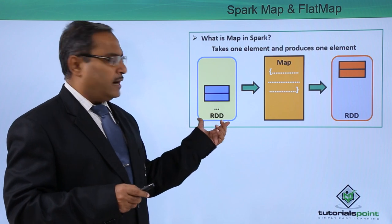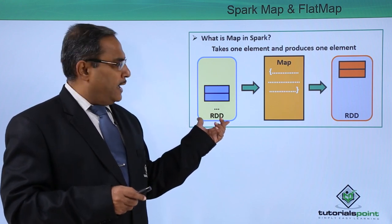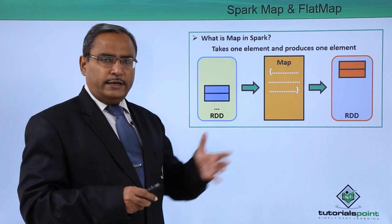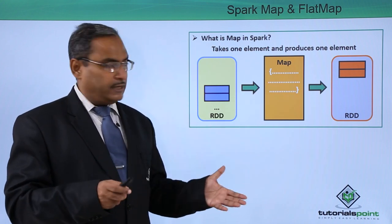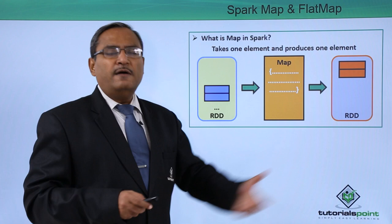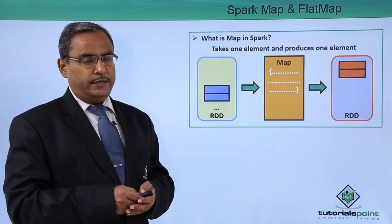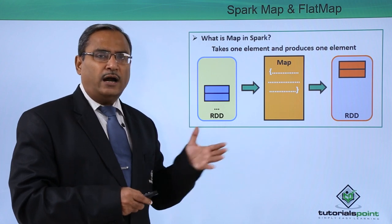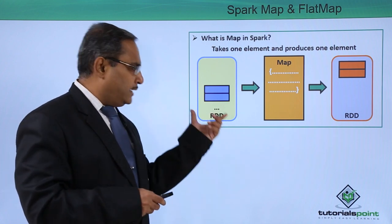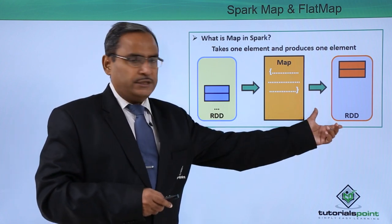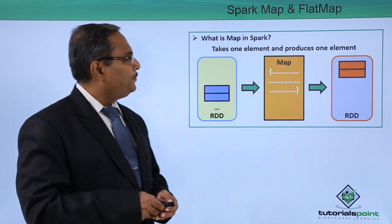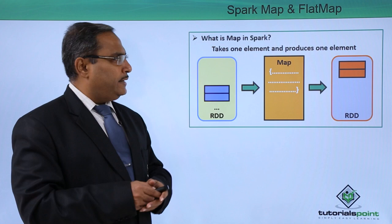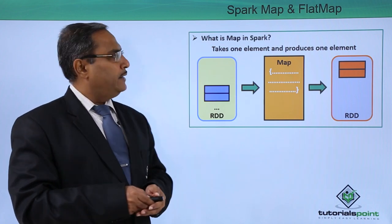Here you can see that this RDD is the input RDD and it is being input to this map. This map can contain some user-defined operations, and then it produces the final output also as an RDD. Since map and flat map are transformations, they take RDD as input and produce RDD as output. The main feature of map is it takes one element and produces one element.